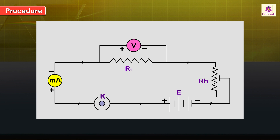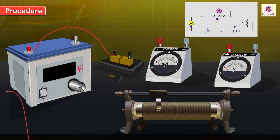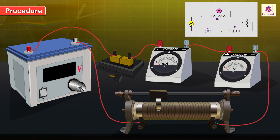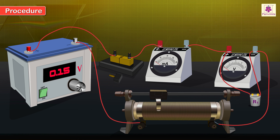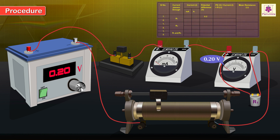Procedure: A DC voltmeter is connected across R1. Connect all the components according to the circuit diagram and switch on the circuit. Set the regulator of the variable DC power supply to obtain a low PD of say 0.2 volts. Switch on the current and gently adjust the slider of the rheostat to allow a small current to pass through R1. Note down the readings of the two meters, then switch off the current.